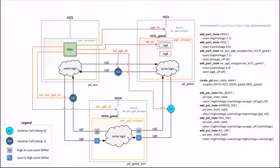Now comes the final part where we define the power state table. First we define the values or states the supply ports can take using the UPF command add_port_state. VDDH and VDDL ports can each have one value — 1.1V and 0.9V respectively. But the output port of the shutdown logic or power gated switch can have two values: the corresponding supply voltage or off. Then we create a power state table using the create_pst command, which defines the combination of states that can exist at the same time during operation. Finally, using the add_pst_state command we define the state of each supply net for one possible state of the design.